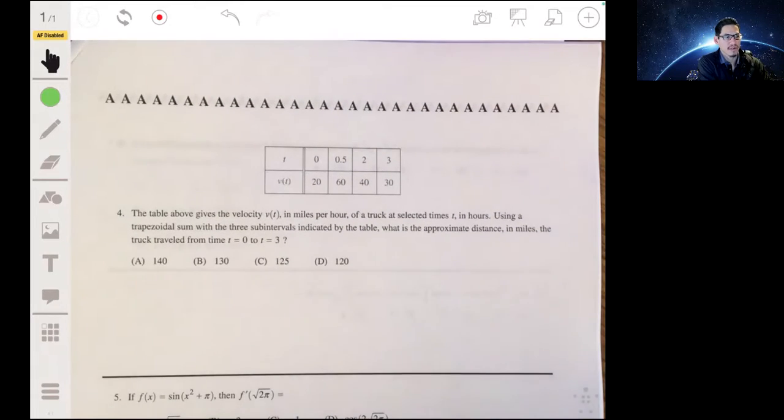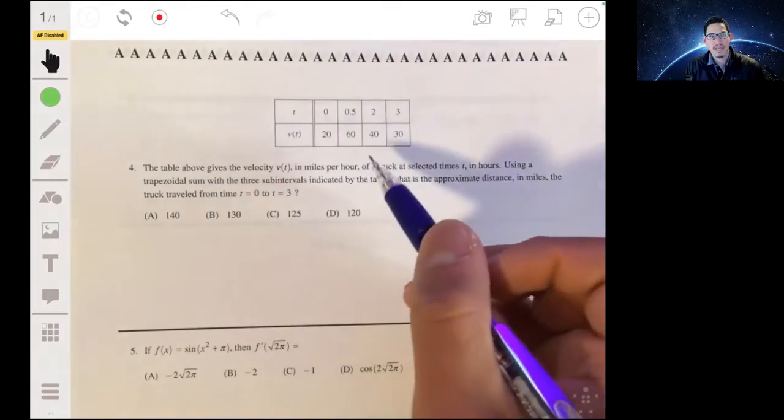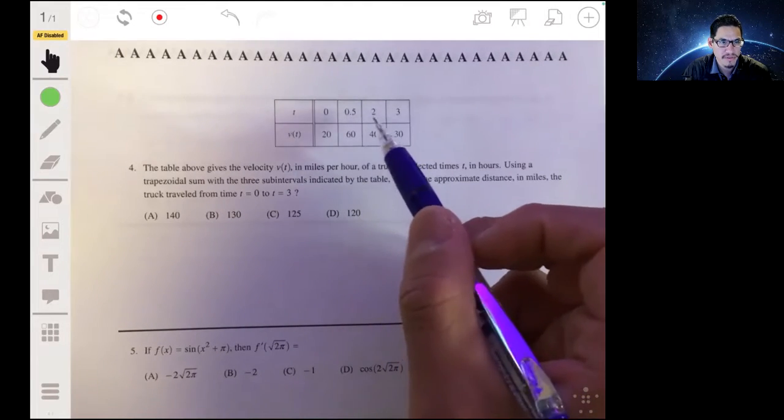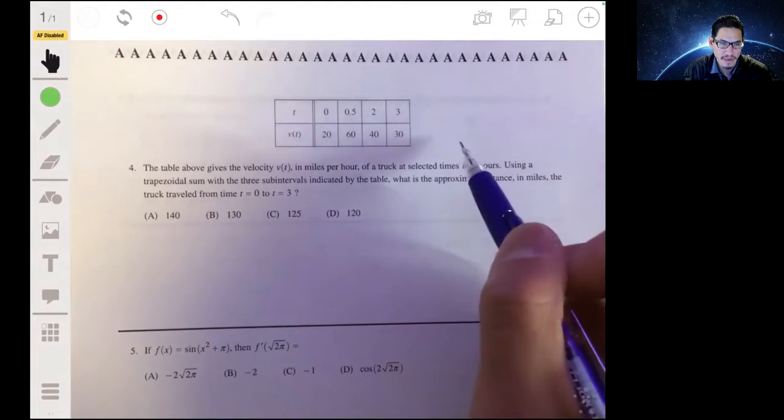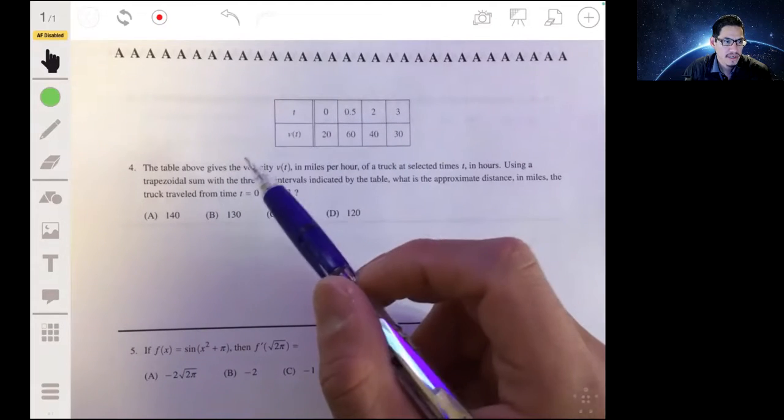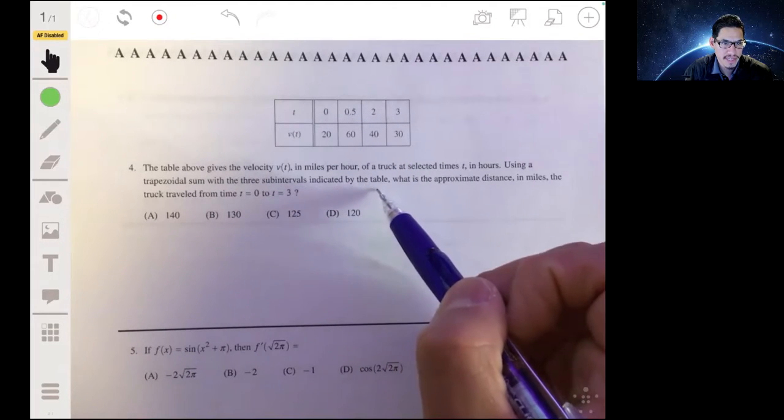Alright, problem four, we're going to use the trapezoidal sum rule. Here, we're given a table that shows the velocity in miles per hour of a truck at these selected times, so 0, 0.5, 2, and 3. They're hours, so half an hour, two hours, three hours. And we're going to use a trapezoidal sum of three subintervals indicated by the table.